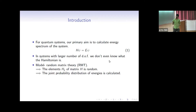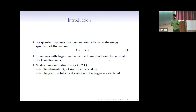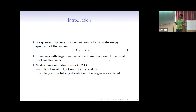In random matrix theory, what we do is take the elements of the matrix H_ij to be random, taken from some probability distribution. And as the elements are random, we get some distribution of these energies instead of the exact energies.